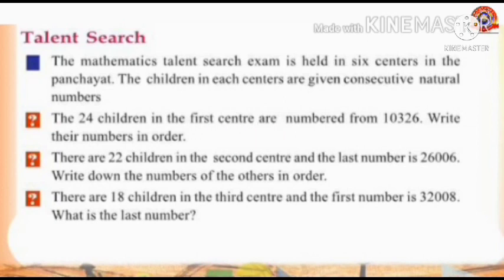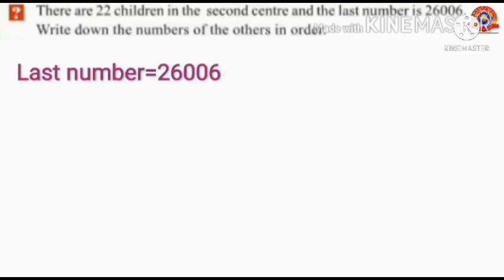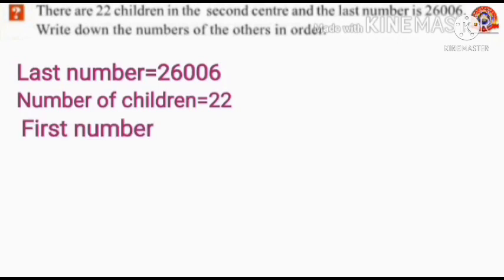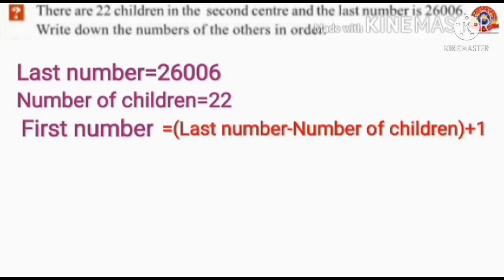Next question: There are 22 children in the second center and the last number is 26,006. Write down the numbers of the others in order. Here the last number is 26,006, number of children equals 22. To find out the first number we apply a formula: last number minus number of children plus 1. That is, first number equals 26,006 minus 22 plus 1.